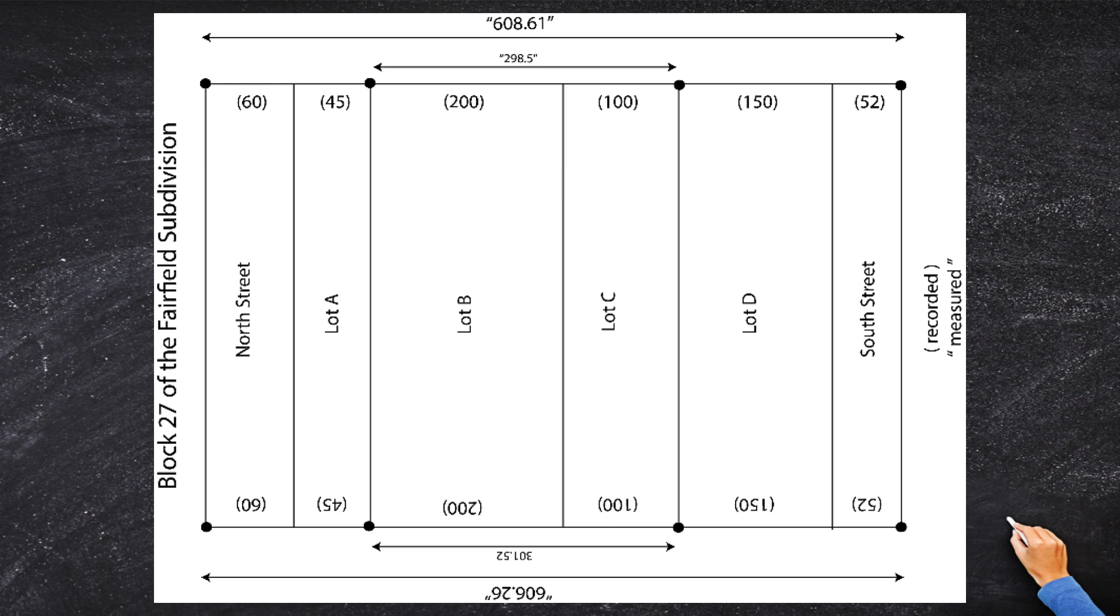Now, I kind of got lazy and didn't do the math here, but let's go ahead and add up all of the record distances. So 60 plus 45 plus 200 plus 100 plus 150 plus 52. Oh, that totals 607. So the record distance is 607 on the top line, but the measured is 608.67. All right. Well, look at that.